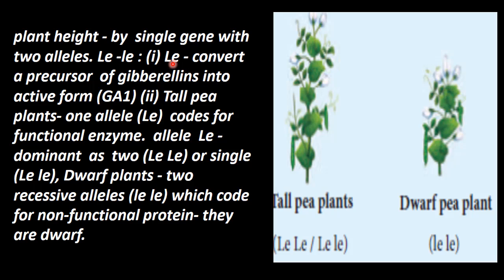The capital LE allele converts a precursor of Gibberellin. What is Gibberellin? It is a hormone that is acidic in nature, produced in the plastids. It can be activated in the plastids or in the endoplasmic reticulum, and ions will go to the cytosol — that is, in the cytoplasm. That conversion into active form is called GA1.